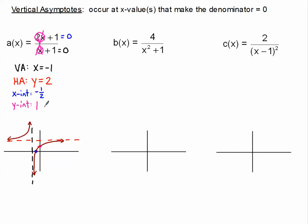Now let's talk about domain and range. The domain is everything except for the one x value we could never plug in, which was negative 1. So in set notation: all x such that x is not equal to negative 1. Interval notation is absolutely fine as well.